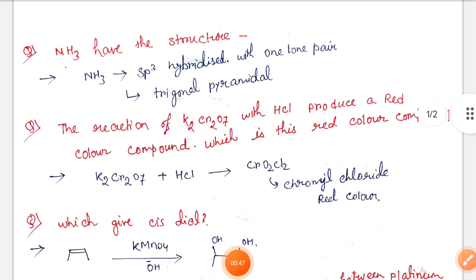Next, the reaction of K2Cr2O7 with HCl produces a red color compound. Which is the red color compound? This is chromyl chloride, CrO2Cl2.